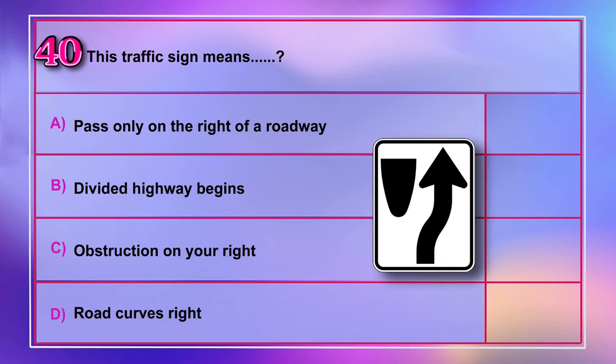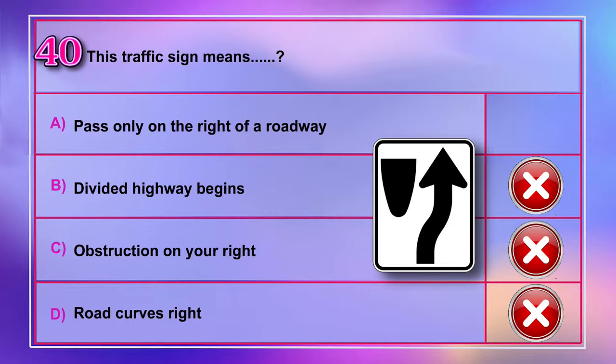Question number 40: This traffic sign means A) pass only on the right of a roadway, B) divided highway begins, C) obstruction on your right, D) road curves right. Correct answer is A: pass only on the right of the roadway.